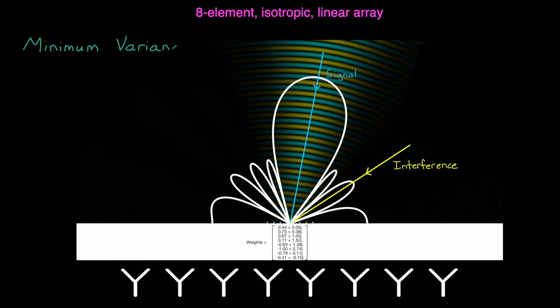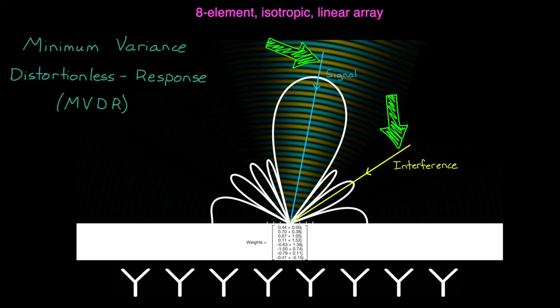And this is the idea behind the minimum variance distortionless response adaptive beamformer, or MVDR. With MVDR, we have to give the algorithm two things. We need to give it the received signal at the array so that it has an idea of the total power that it's trying to minimize. And we have to tell it where we want a distortionless response. That is, we have to give it the angle of arrival for the signal so that it constrains the algorithm to maintain the gain in that direction.